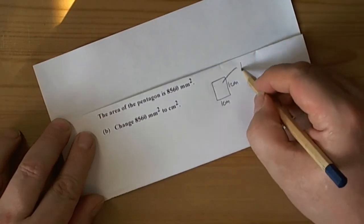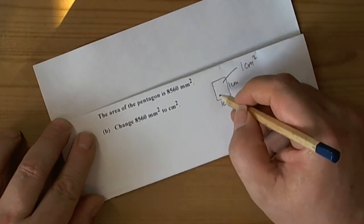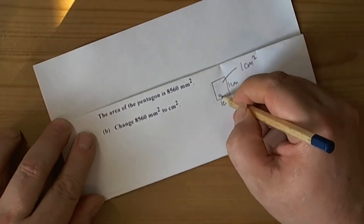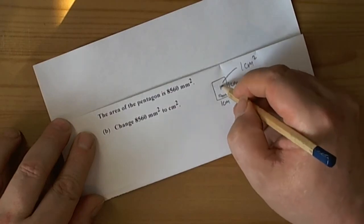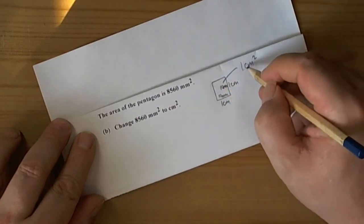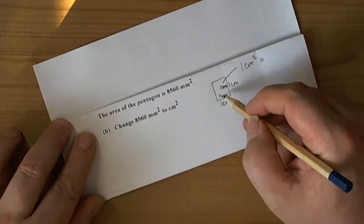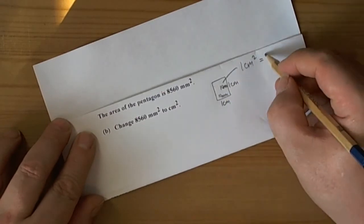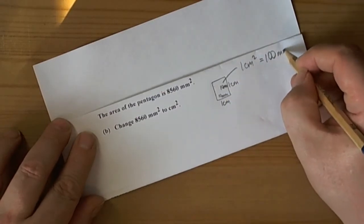It will have an area of one square centimeter, but then we can say well one centimeter is the same as ten millimeters. So in this case we can see that one square centimeter is actually the same as doing ten millimeters by ten millimeters, which is one hundred square millimeters.